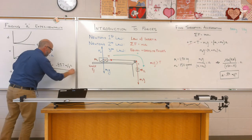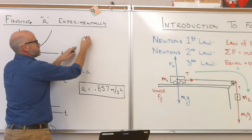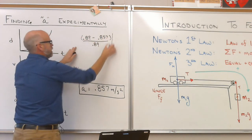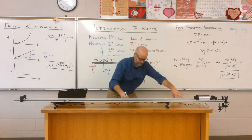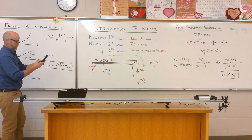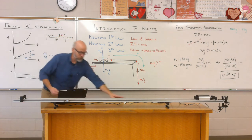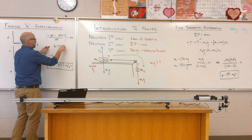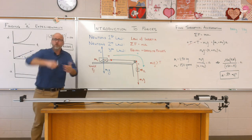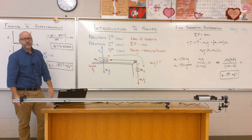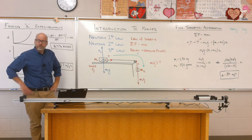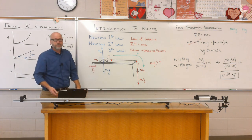Now if I want to find the percent error, I would do: theoretical value 0.89 minus experimental, divided by the theoretical, absolute value, times 100. Did you guys get 3.7%? And that's why I'm running my own cameras, my own mics — two different cameras at the same time — and I'm collecting data. You know what's really good? Newton's second law. Because it really works. You just saw it work right there.